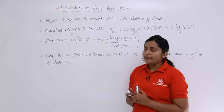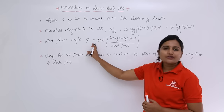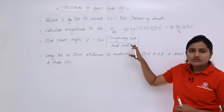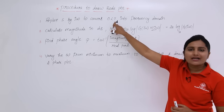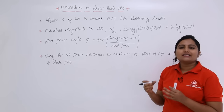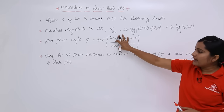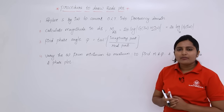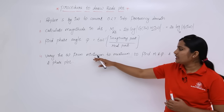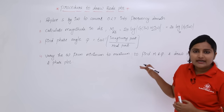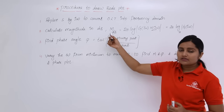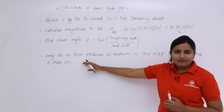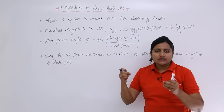The next step is to find the phase angle φ. The formula is φ = tan⁻¹(imaginary part / real part), where the imaginary and real parts are taken from the open loop transfer function. After that, vary ω from minimum to maximum to calculate M and φ. By noting these values on a graph, you obtain the magnitude and phase plots of the Bode plot.